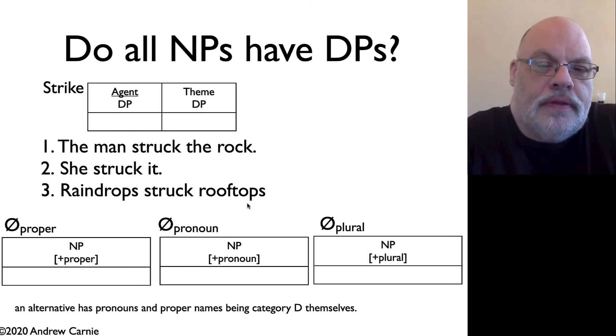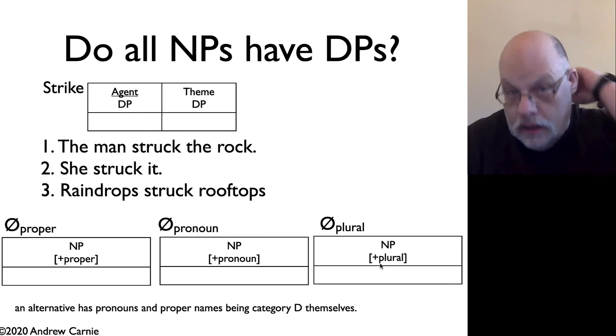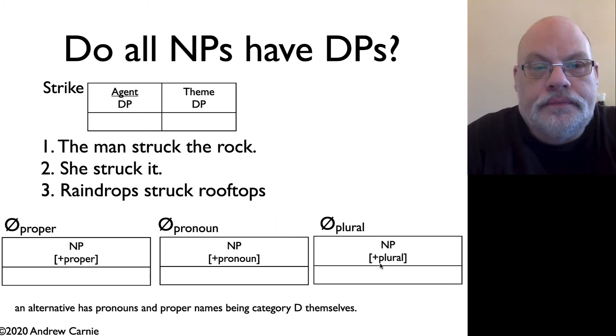So what do we do about this requirement on the verb strike that requires it be a DP? Well, the solution is to claim that there are actually null determiners. And in fact, we have to propose three null determiners. We have to propose one for proper names, zero-proper, and it takes noun phrases that are headed by a proper noun; zero-pronoun, which shows up with pronouns; and zero-plural, which shows up with plurals. This then explains why these items like pronouns and bare plurals can in fact appear in these slots that are otherwise specified for DPs, because we have null determiners that head them.